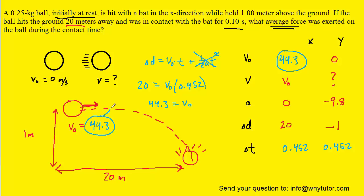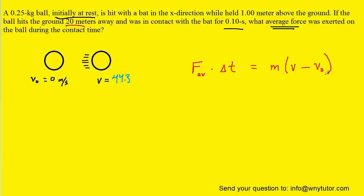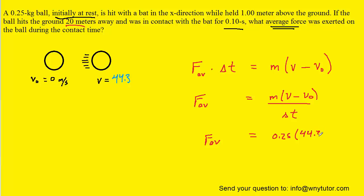That initial velocity in the x direction of 44.3 meters per second was the final velocity in the first part of the problem when the bat had hit the ball, so we carry it back and label it. Now that we have the final velocity after the ball was hit by the bat, we go back to the impulse-momentum equation, divide both sides by delta t to isolate the average force, and plug in the known values: mass = 0.25 kg, final velocity = 44.3 m/s, initial velocity = 0, and time interval = 0.10 seconds. This gives us about 111 newtons as the average force — the final answer.